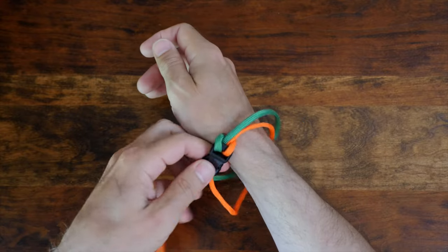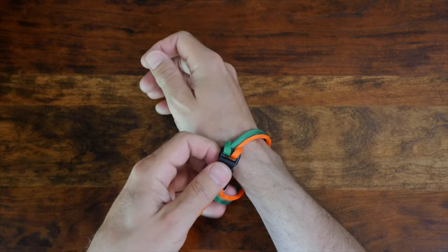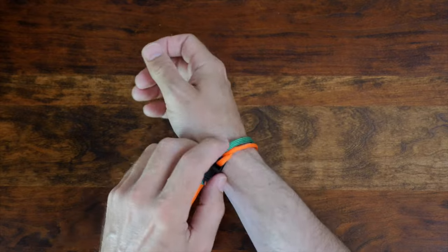Cinch up the paracord so it's comfortably snug, and then release the clasp while being careful to maintain the proper length of bracelet.